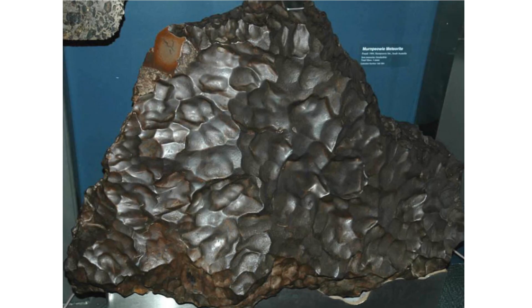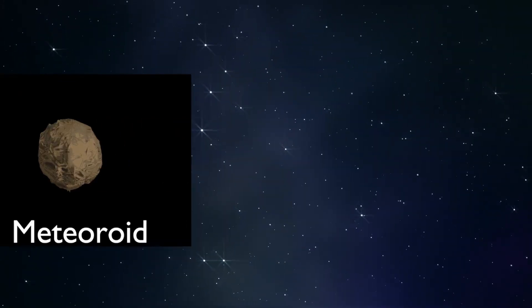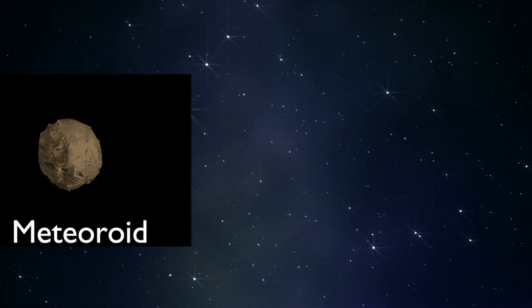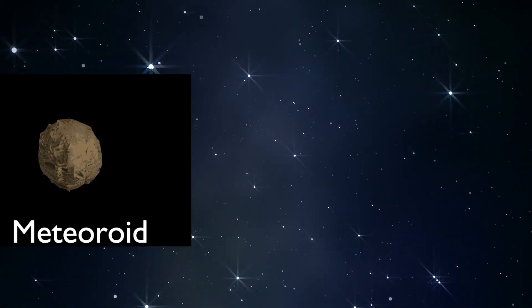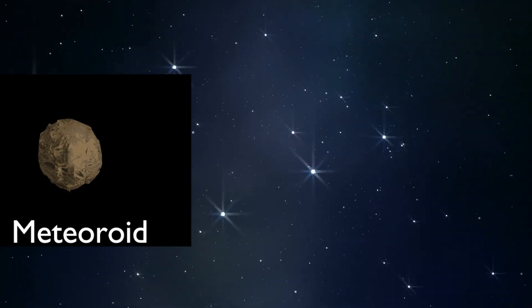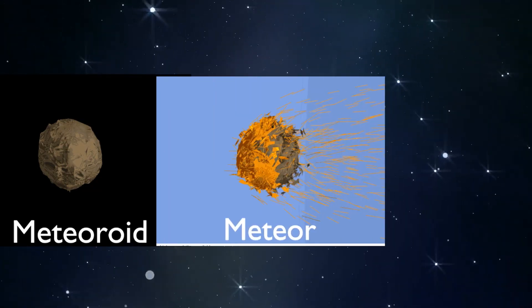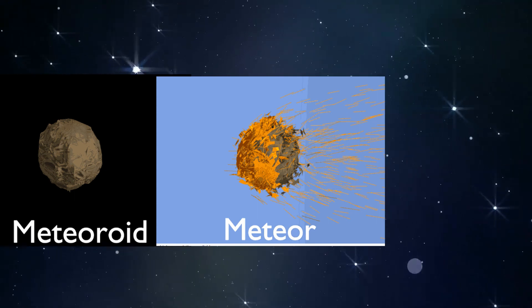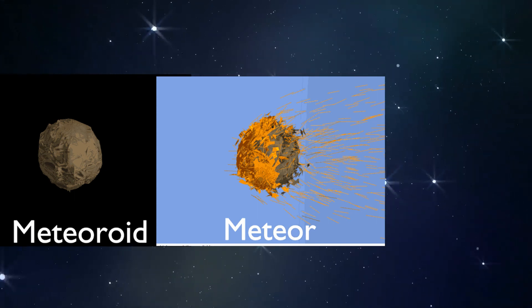Now here is the sequence. You have a meteoroid in space. When it enters the atmosphere, it is a meteor. When it strikes the Earth, it is a meteorite.